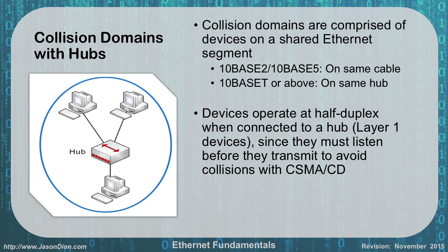We call this a collision domain — how many devices are on a shared bus or shared network segment. Hubs all share one collision domain. Wireless access points also share one domain. Collision domains include everything sharing that network segment. With thicknet or thinnet, everyone on the same cable is in one domain. With Cat3 and above (10BaseT or higher), everyone on the same hub is in one domain. Devices connected to a hub operate at half duplex — a layer one device — because they must listen before they can transmit.